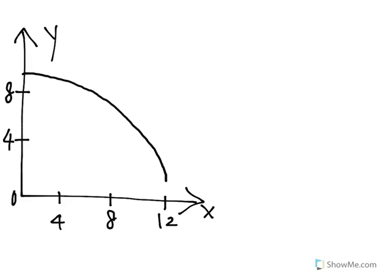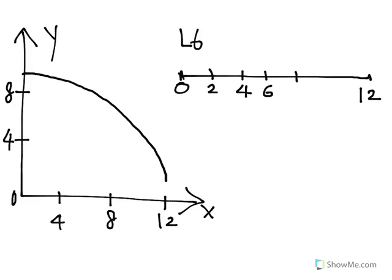The first type is L6. Sample points are left endpoints. So let's make a number line here from 0 to 12. We're using six rectangles, so we can divide 0 to 12 into six rectangles: 2, 4, 6, 8, 10, and 12.